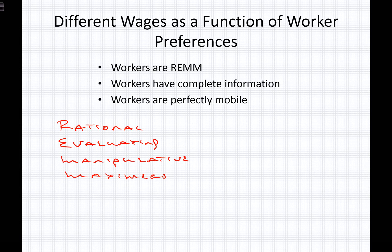When we say that workers are rational, it doesn't mean that workers all make the same decisions on the same bases. It's rational in the sense that workers, as all economic agents, actually act pretty much in accordance with what they believe to be true. When someone is acting rationally, we believe they're acting in their own self-interest, in accordance with what they believe to be true, and their behavior becomes somewhat predictive based upon their normative values.